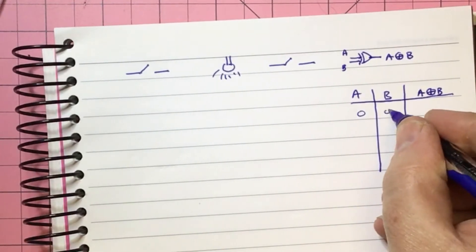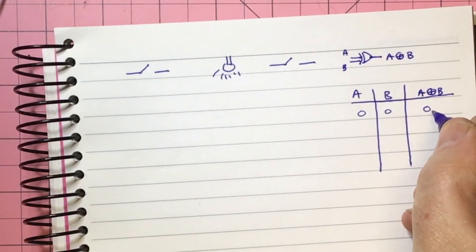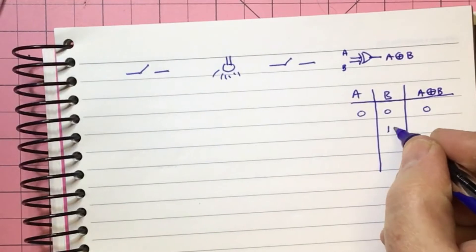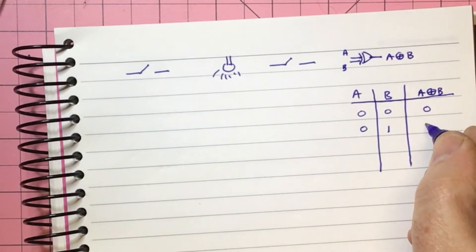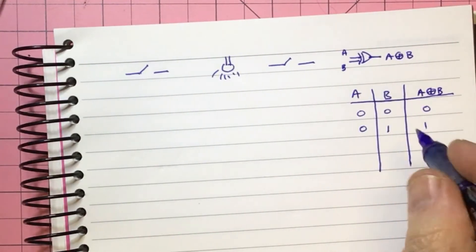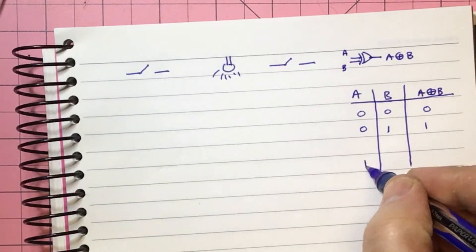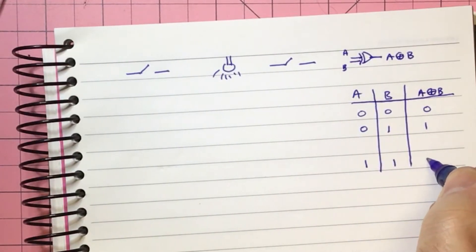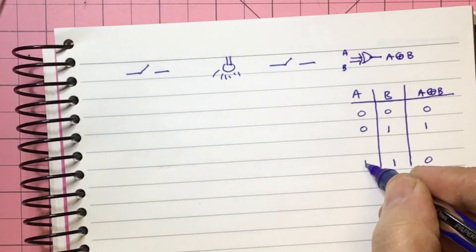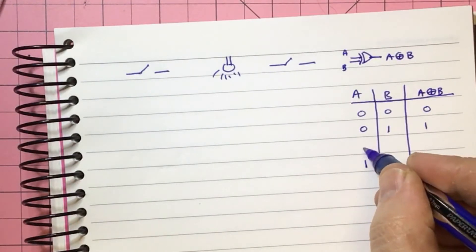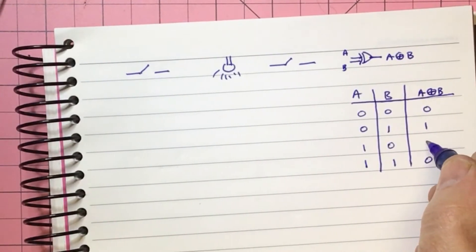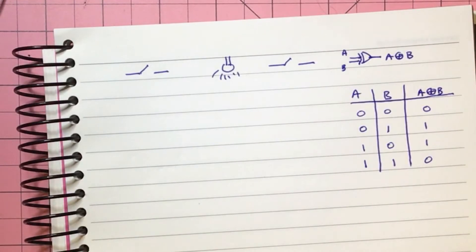And what that looks like is whatever state the output is in, when you change the input, the output changes. So if you've got 0, 0, and a 0 output and we change this to 1, then the output changes. If we then change this one to a 1, then that also changes, and then if we change this one to a 0, then it also changes again. So that's perfect.